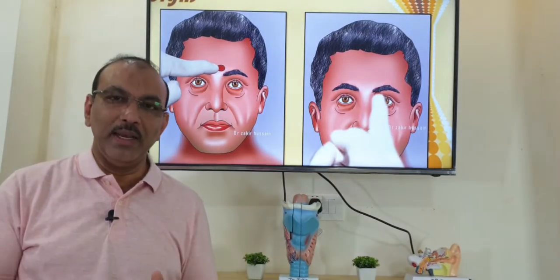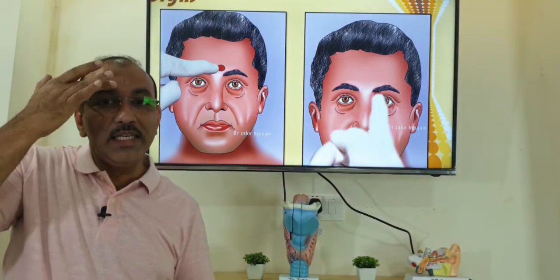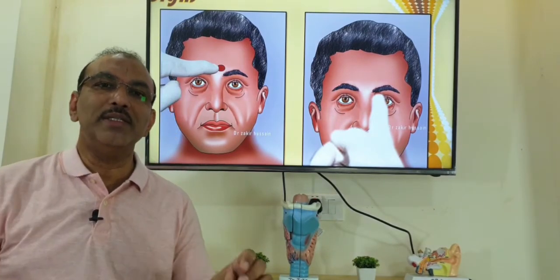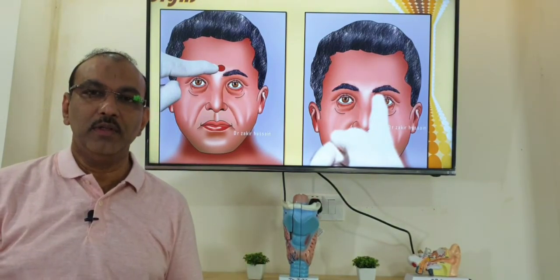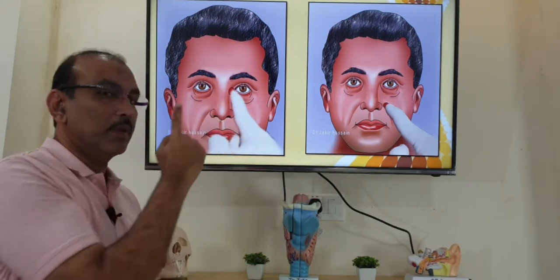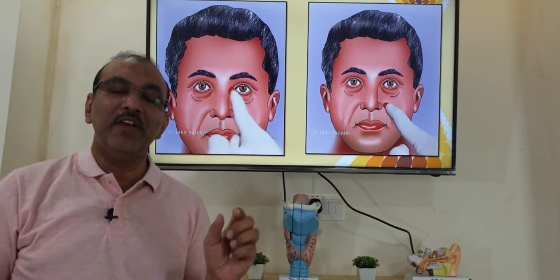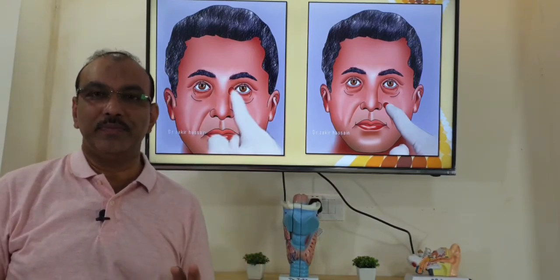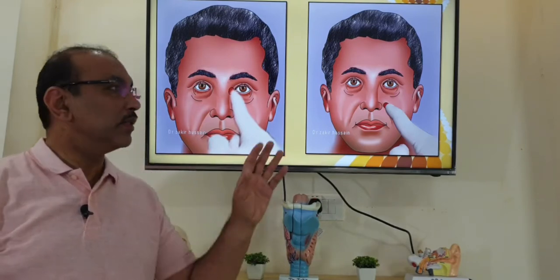When we examine and touch the forehead area, if it is painful or tender, that means the frontal sinuses are inflamed — frontal sinusitis. When we touch the cheek area and it is painful, it is maxillary sinusitis. If we touch medially to the eye on both sides and it is tender or painful there, that means it is ethmoiditis.